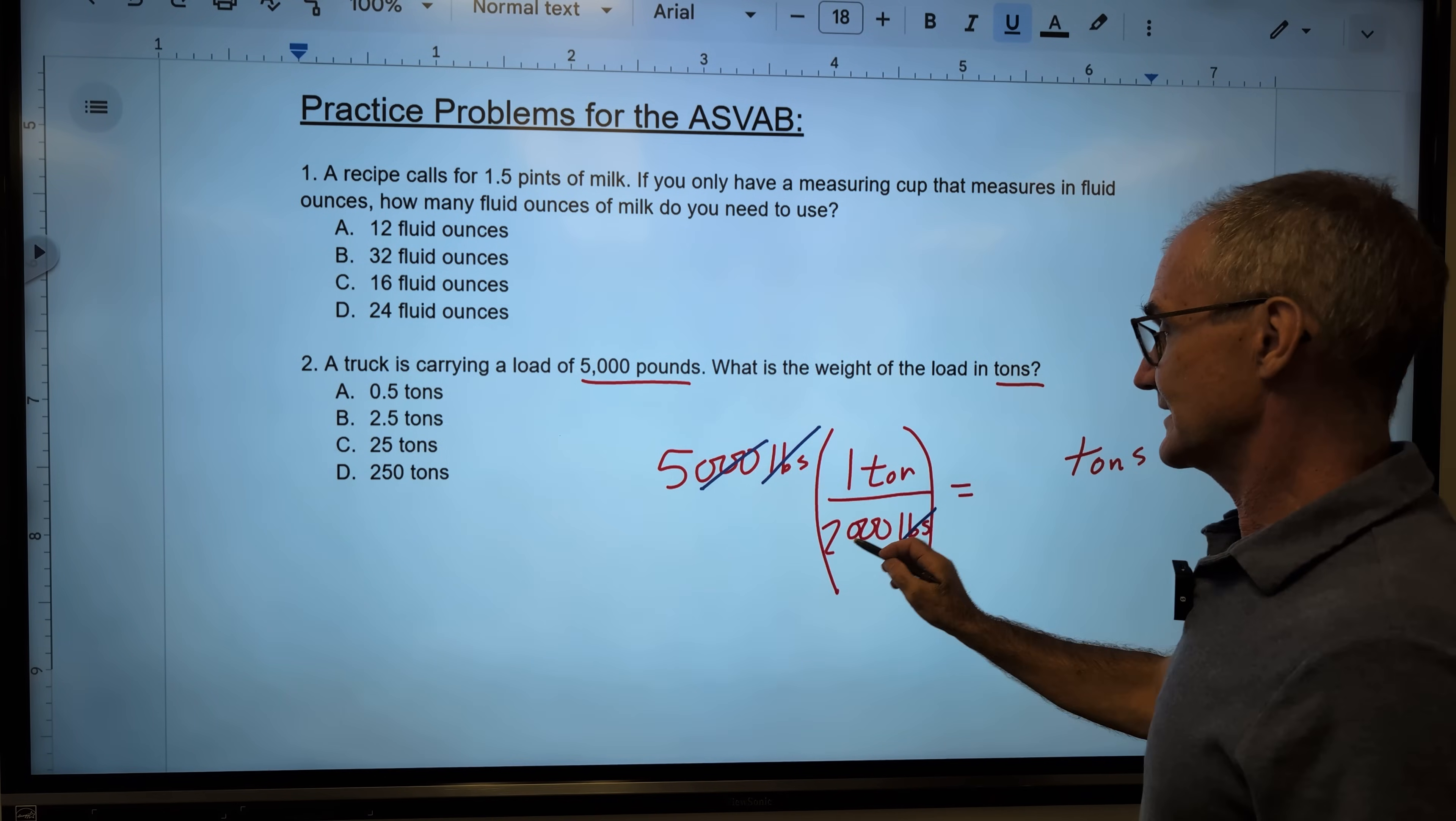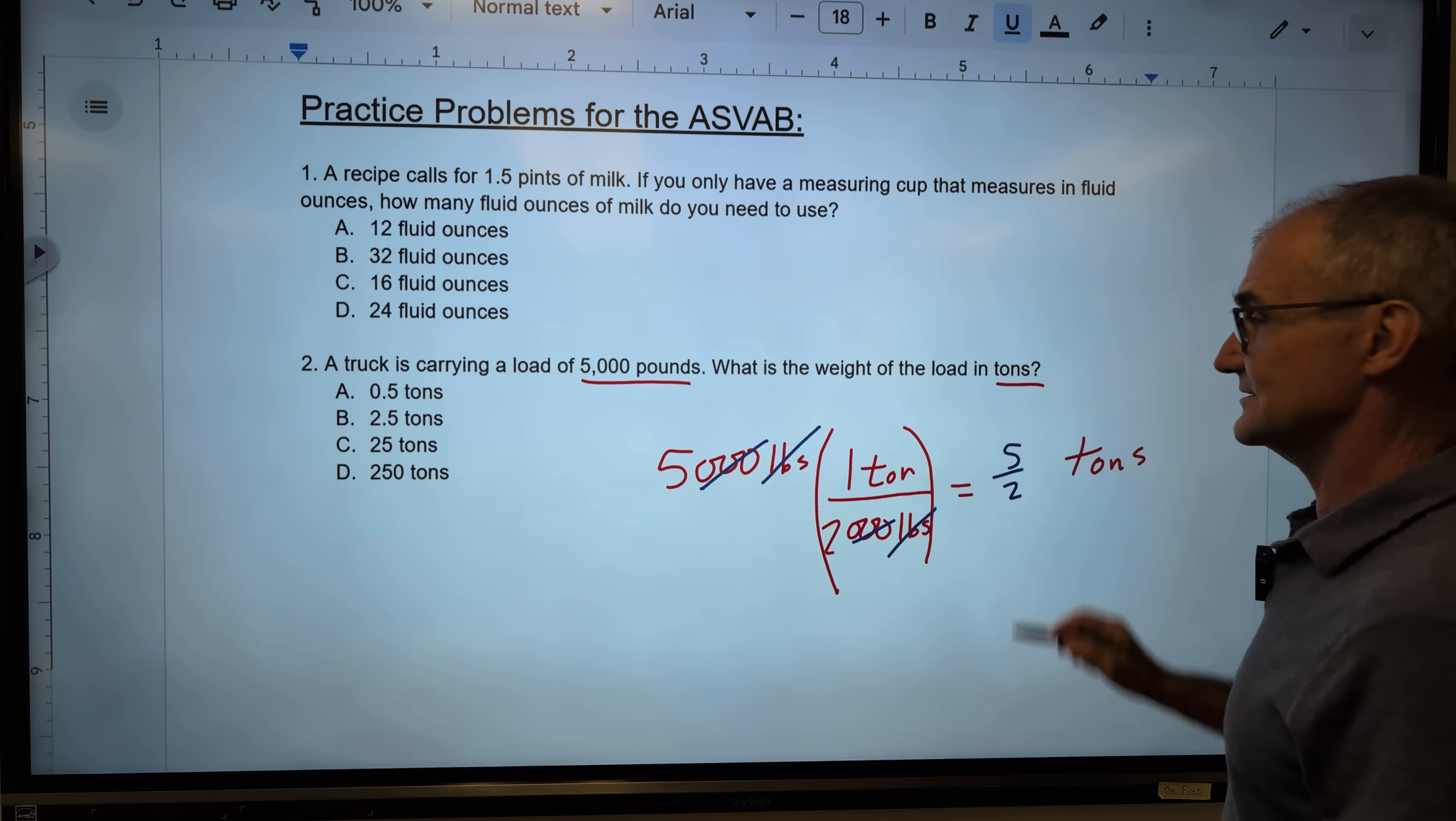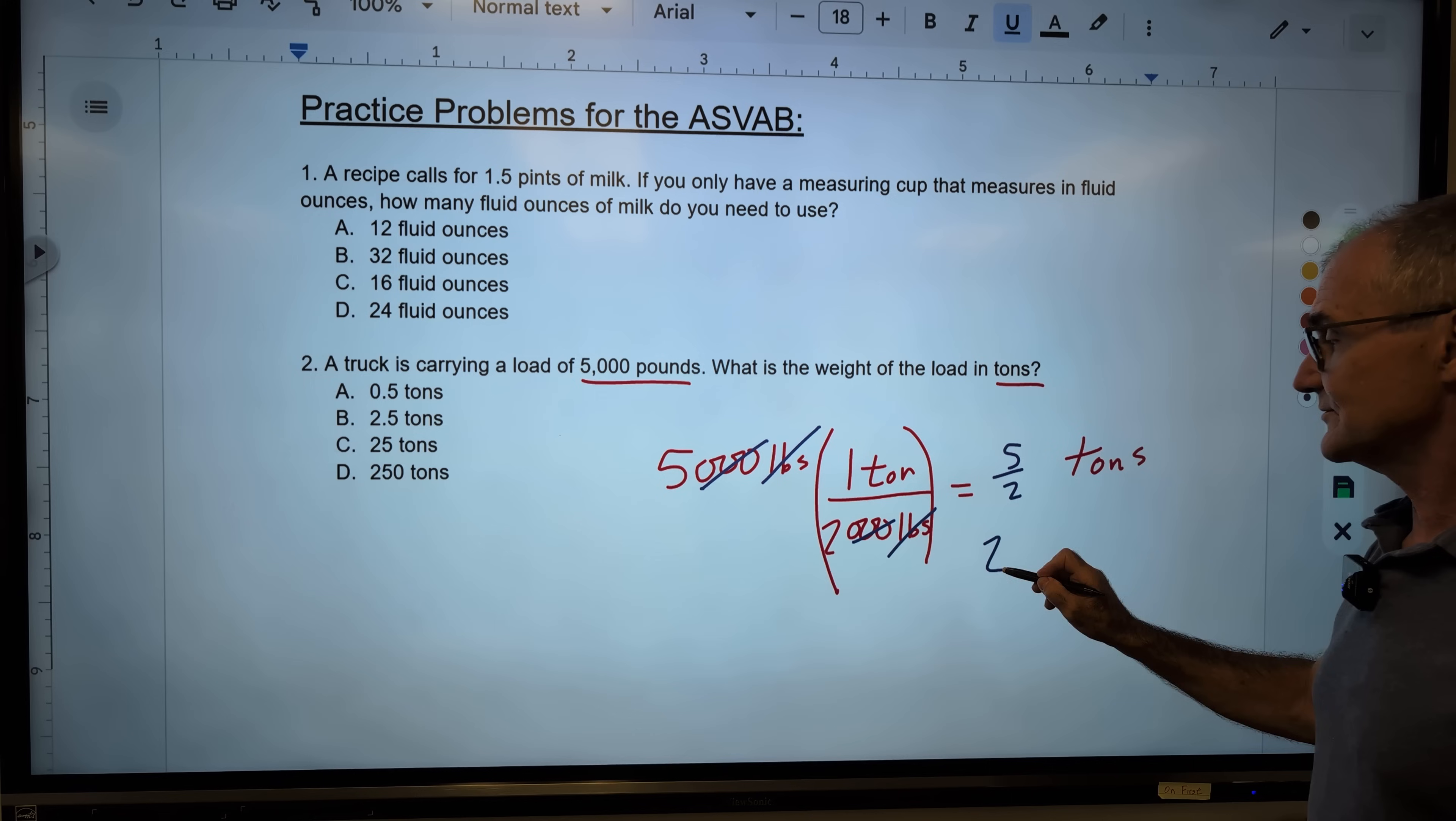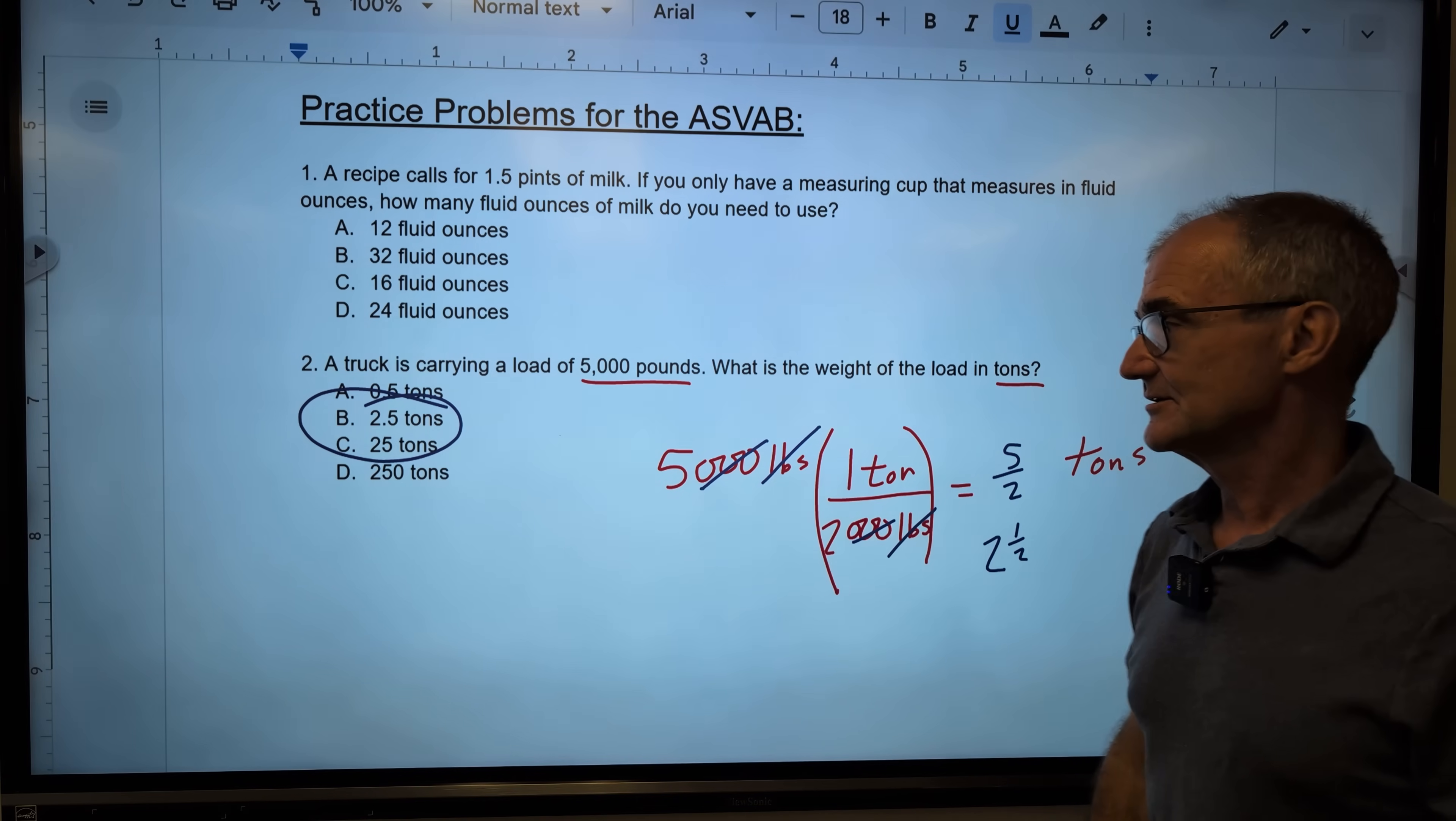Now I have 5,000 divided by 2,000 tons. Those zeros will cancel with those zeros. 5 over 2 is my answer. I don't see it over there. I need to do a decimal approximation of this. 2 goes into 5 two times with one left over. 2 and a half tons is my answer, or 2.5 tons right there, answer B.